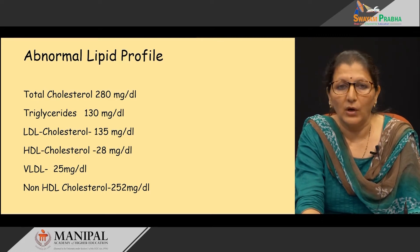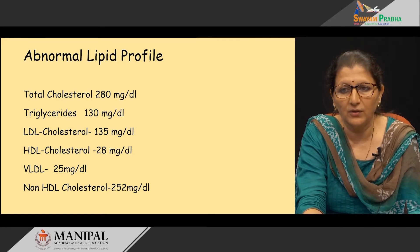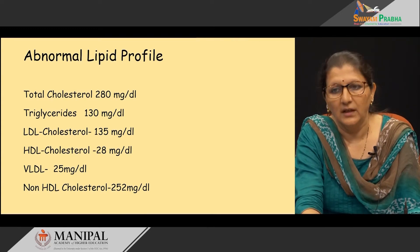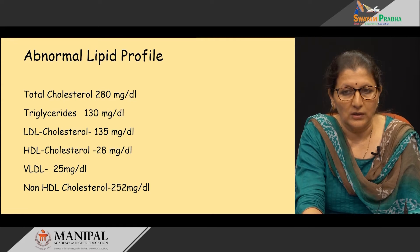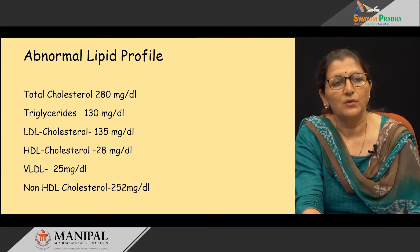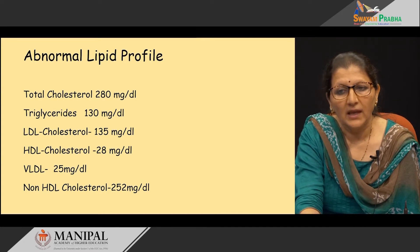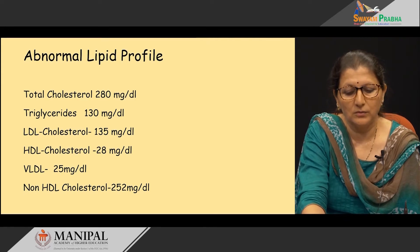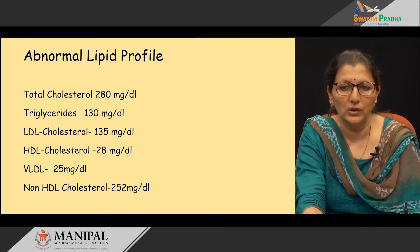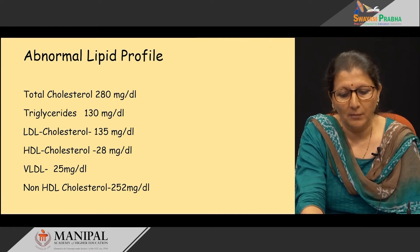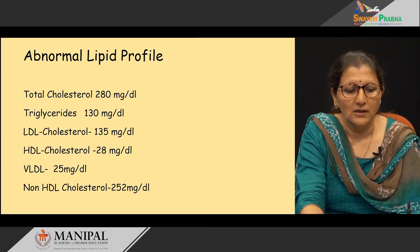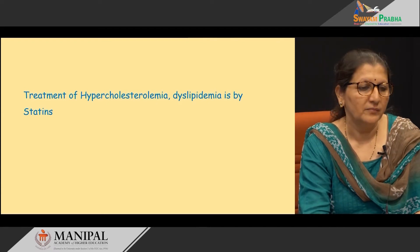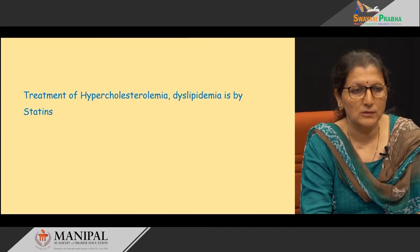What is the treatment? The targets of treatment are to bring down the total cholesterol from 280 to under 200. Triglycerides are normal, so we need not treat the triglyceride level; we have to target the cholesterol and the high LDL cholesterol. The treatment is to give statins to bring down the total cholesterol level, and we can also add niacin to bring down the LDL cholesterol level. Treatment of hypercholesterolemia or dyslipidemia in this patient is by statins.